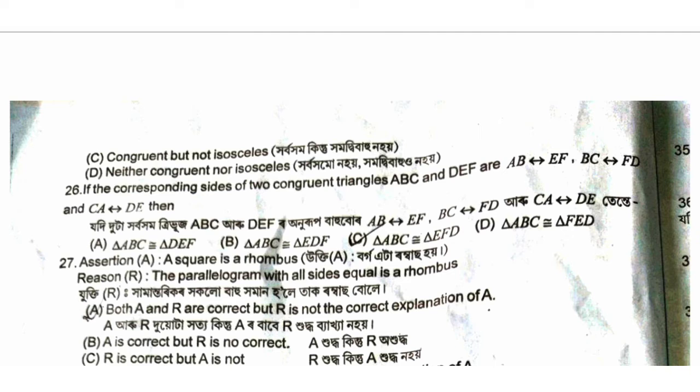If the corresponding sides of 2 congruent triangles are A, B, C and D, E, F. R, E, F — B, C, F, T, R, C, A, D, E.